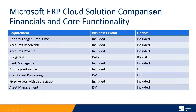First is financials and core functionality. Both systems are known for being some of the best accounting systems on the market — Microsoft does a good job there. What I have in this slide, "ISV" means functionality typically delivered through a third-party ISV solution. GL, AR, and AP are all included with not a lot of differences between the two applications. They both do the job for most customers. Budgeting is fairly basic in Business Central but very robust and detailed within the Finance application.